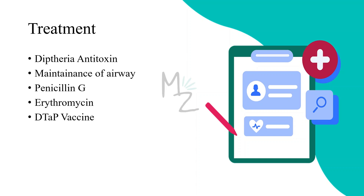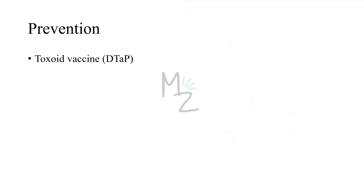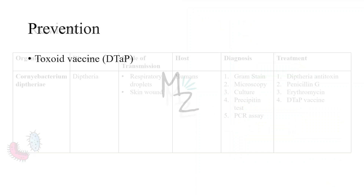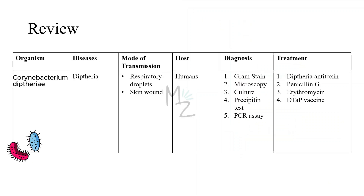Prevention. The toxoid vaccine DTaP is going to prevent people from getting diphtheria. Let's review everything in this short table.